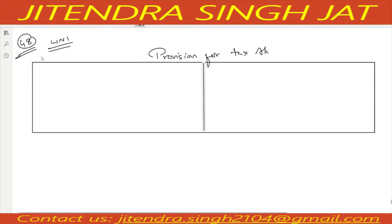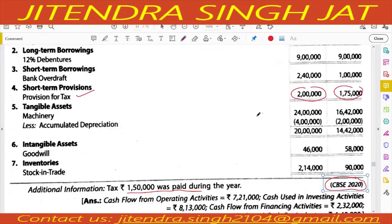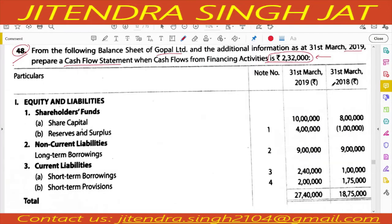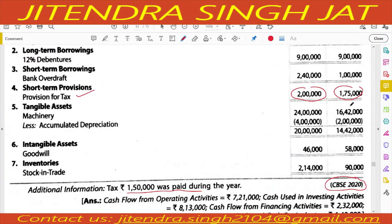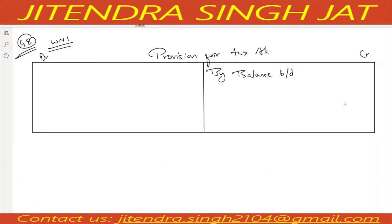The provision for tax account starts from the credit side. Write opening balance — balance brought down. The opening balance given is 1,75,000.